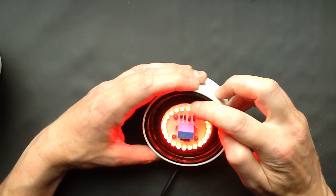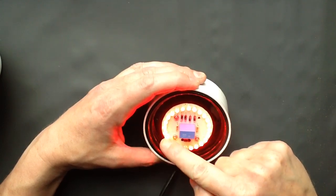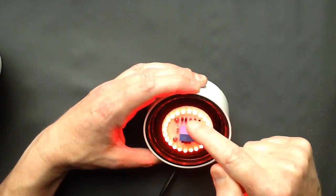How many LEDs has it got? 1, 2, 3, 4, 5, 6, 7, 8, 9, 10, 11, 12, 13, 14, 15, 16, 17, 18, 19, 20... 24 LEDs.